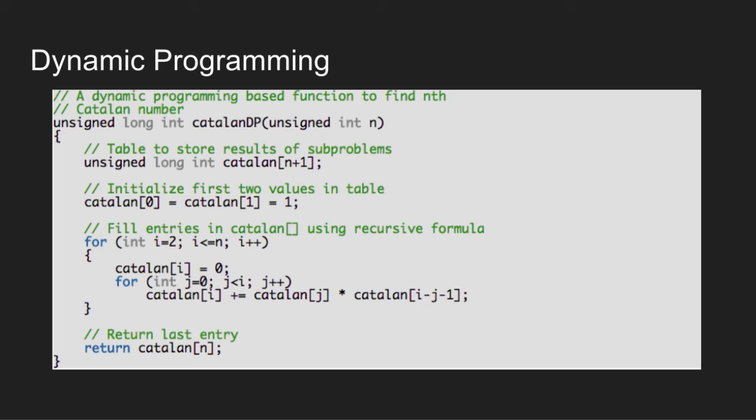This code is a dynamic programming based implementation to find nth Catalan number. We have declared Catalan as an array to store results of subproblems. Catalan of 0 and Catalan of 1 is initialized to 1. For rest of the numbers we compute Catalan by selecting each i till i is less than or equal to n using this recursive formula, where jth node is selected as a root node in each iteration. Catalan of j is selected from first j numbers. Catalan of i-j-1 is selected from remaining numbers. At last, return the value of Catalan of n.